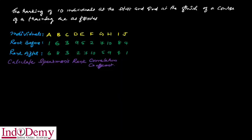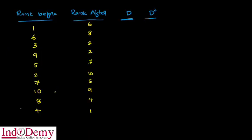The next question: the ranking of 10 individuals at the start and at the finish of a training program are as follows. The first column is the individual score, and we will check the rank differences. We find the difference D-value here.